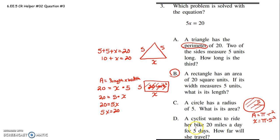A cyclist wants to ride her bike 20 miles a day for 5 days. How far will she travel? So she's riding 20 miles a day over 5 days. If you take 20 miles each day and you do that for 5 days, 20 times 5 would give me x. So that's what letter D would look like. It's definitely B. I hope that helps.